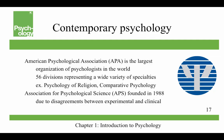What about contemporary psychology? The American Psychological Association, or APA, is the largest organization of psychologists in the world, divided into 56 different divisions representing a wide variety of specialties — such as psychology of religion, comparative psychology, and a history of psychology division. The APS, the Association for Psychological Science, was founded in 1988 due to disagreements between experimental and clinical psychologists. Many felt the APA had become an association for clinical psychologists, so experimental psychologists formed APS.